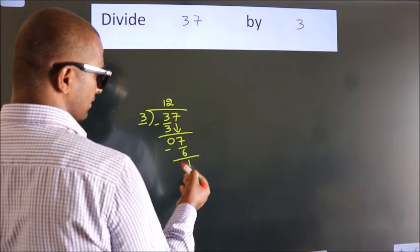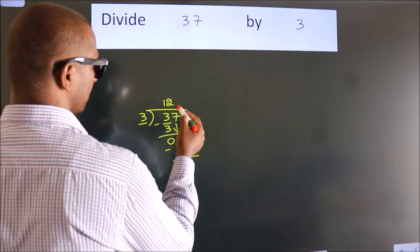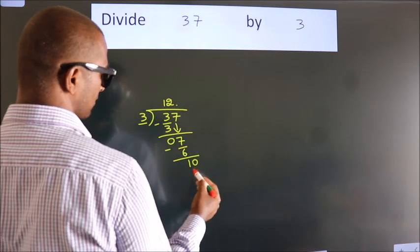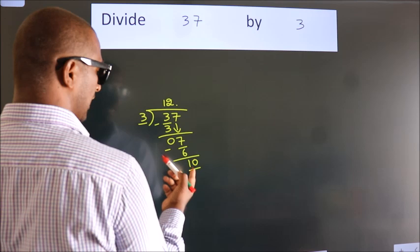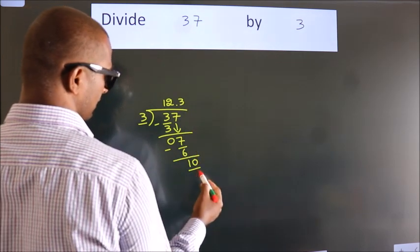After this, no more numbers to bring it down. So, what we do is, we put dot take 0, so 10. A number close to 10 in 3 table is 3 3s, 9.